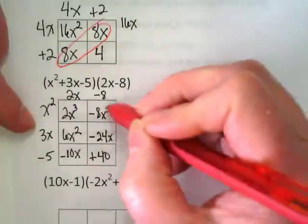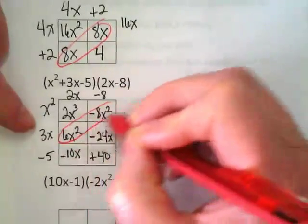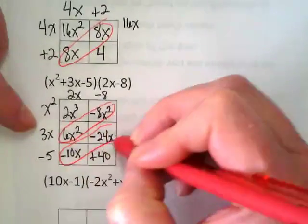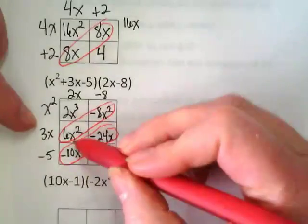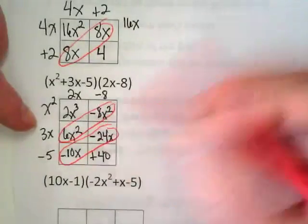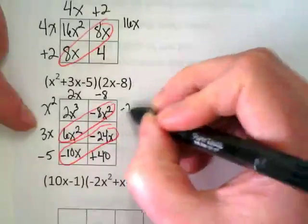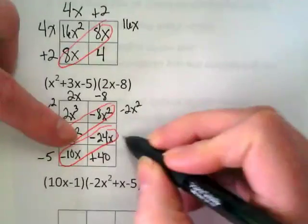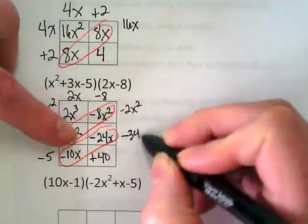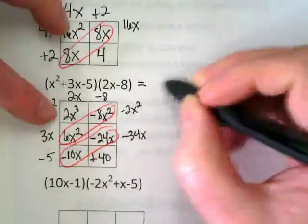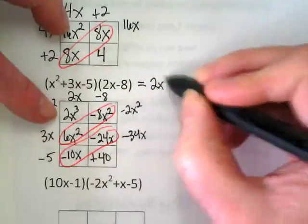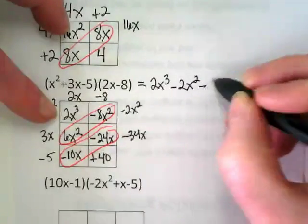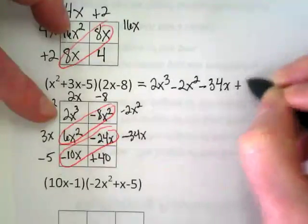I have two sets of like terms in my diagonals. There's a set here with the x squared and a set here with just x's. 6x squared minus 8x squared is going to leave us with negative 2x squared. Negative 10x minus 24x is going to give us negative 34x. So our answer is 2x to the 3rd minus 2x squared minus 84x plus 40.